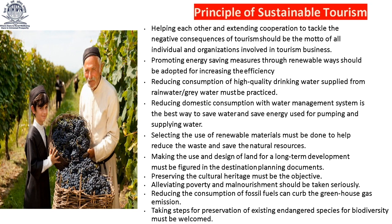Reducing consumption of high-quality drinking water by using rainwater and greywater must be practiced. Reducing domestic water consumption with water management systems is the best way to save water and the energy used for pumping and supplying water. Selecting the use of renewable materials must be done to help reduce waste and save natural resources. Making the use and design of land for long-term development must be included in destination planning documents. Preserving cultural heritage must be an objective. Alleviating poverty and malnutrition should be taken seriously. Reducing consumption of fossil fuel can curb greenhouse emissions. Taking steps for preservation of existing green spaces for biodiversity must be welcomed.